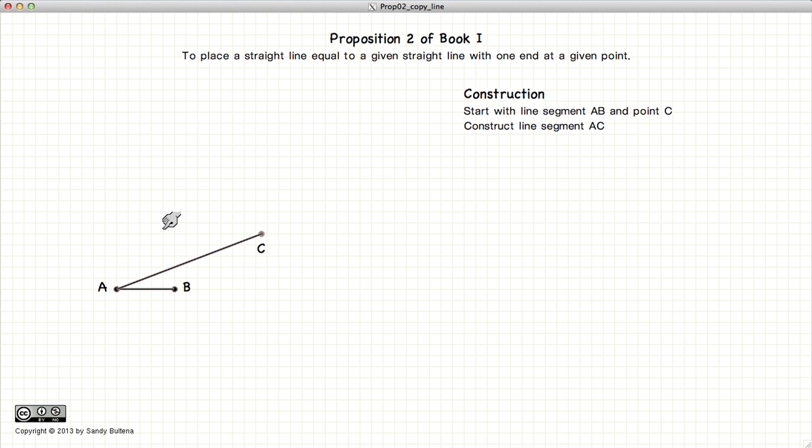Next, we're going to construct an equilateral triangle using the methods described in Proposition 1 on the line AC. So here we're getting our equilateral triangle.